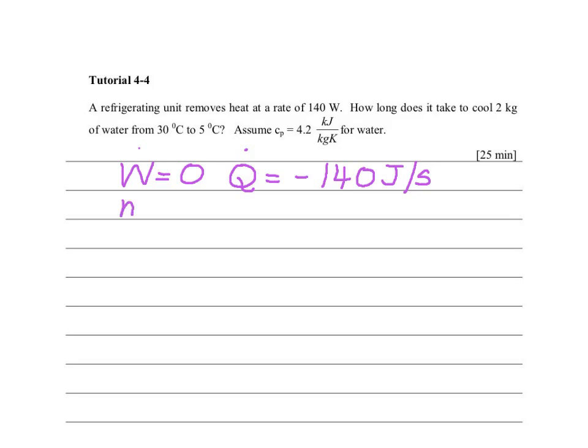The mass given is 2 kilograms, and our change of internal energy, U, is equal to the time taken, delta T. Don't confuse this with temperature. Delta T is the time taken. So instead of writing delta T so that we do not get confused, I'm going to write the whole word, the time taken.